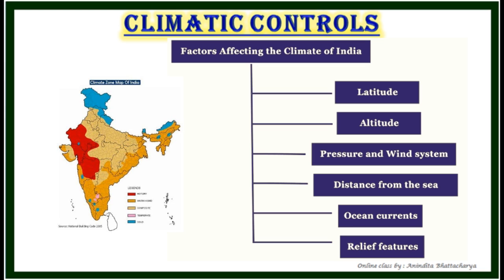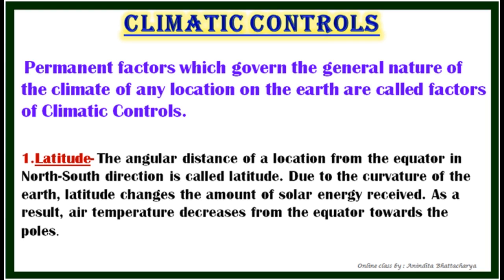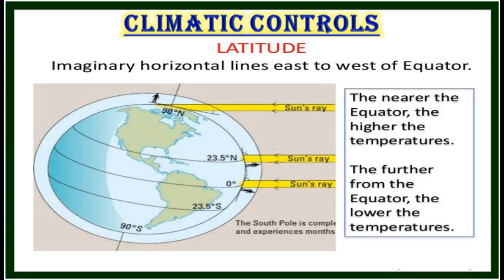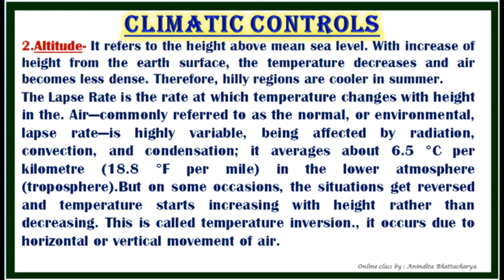Now let's move to the most interesting topic: climatic controls. The permanent factors which govern the general nature of the climate of any location on the earth are called factors of climatic controls. The first one is latitude — the angular distance of a location from the equator in the north-south direction. Due to the curvature of the earth, latitude changes the amount of solar energy received, and as a result temperature decreases from the equator towards the poles. The second control is altitude, which refers to height above sea level — also called elevation. With an increase of height from the earth's surface, temperature decreases and air becomes less dense, which is why hilly regions are cooler in summer.